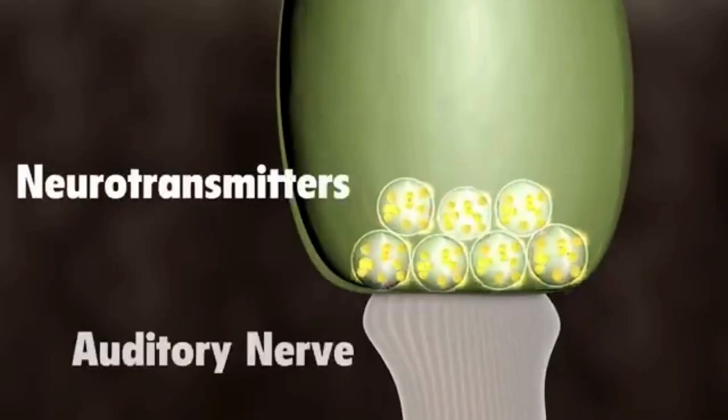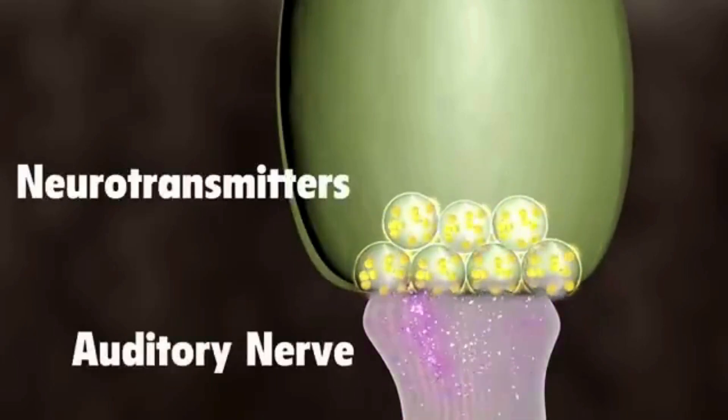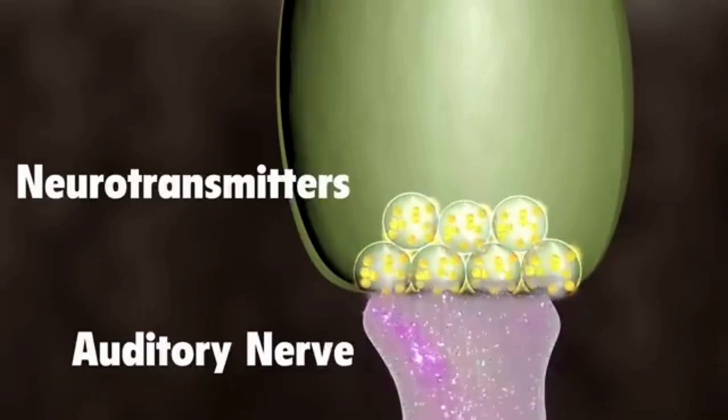The chemicals bind to the auditory nerve cells and create an electrical signal, which travels along the auditory nerve to the brain.